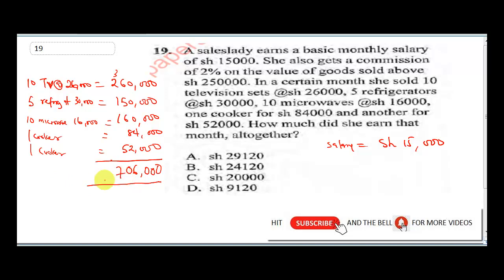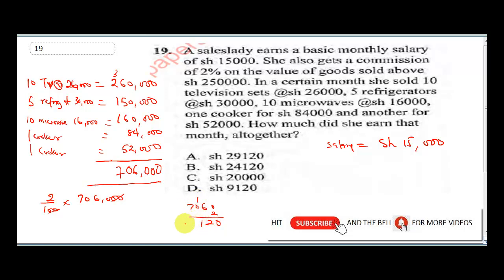We calculate 2 over 100 times 706,000. The zeros cancel, giving us 2 times 706. That's: 2 times 0 is 0, 2 times 6 is 12 carry 1, 2 times 0 is 0 plus 1 is 1, 2 times 7 is 14. So the commission is 14,120 shillings.